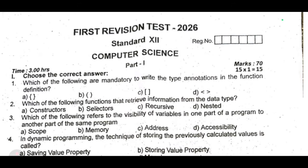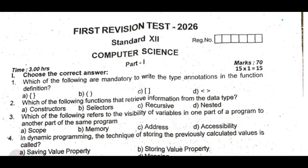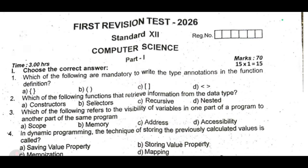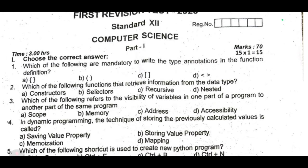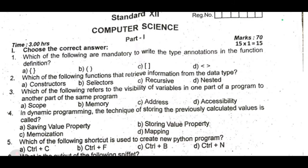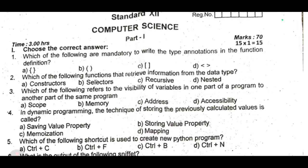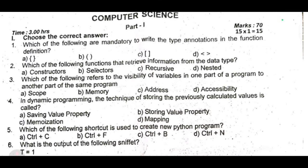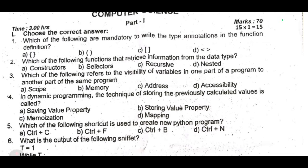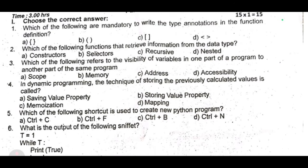First: which of the following are mandatory to write the type annotations in the function definition? Second: which of the following functions retrieve information from the data type? Third: which of the following refers to the visibility of variables in one part of a program to another part of the same program? Fourth: in dynamic programming, the technique of storing previously calculated values is called blank.